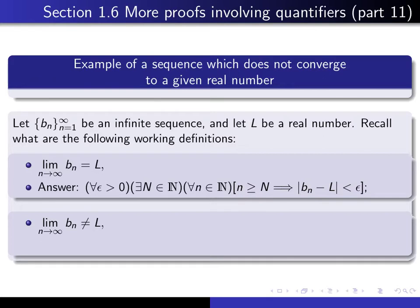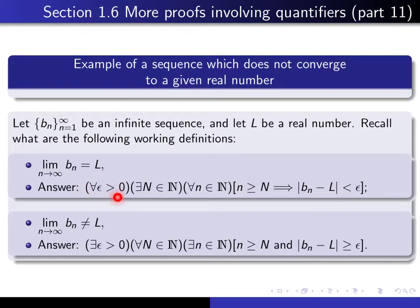Now how about the second one? It says there exists a positive real number epsilon, such that for every natural number N, there exists a natural number n, such that, and now we have to negate P implies Q, so it's P and not Q. N is greater than or equal to N, and the absolute value of B sub n minus L is bigger than or equal to epsilon.